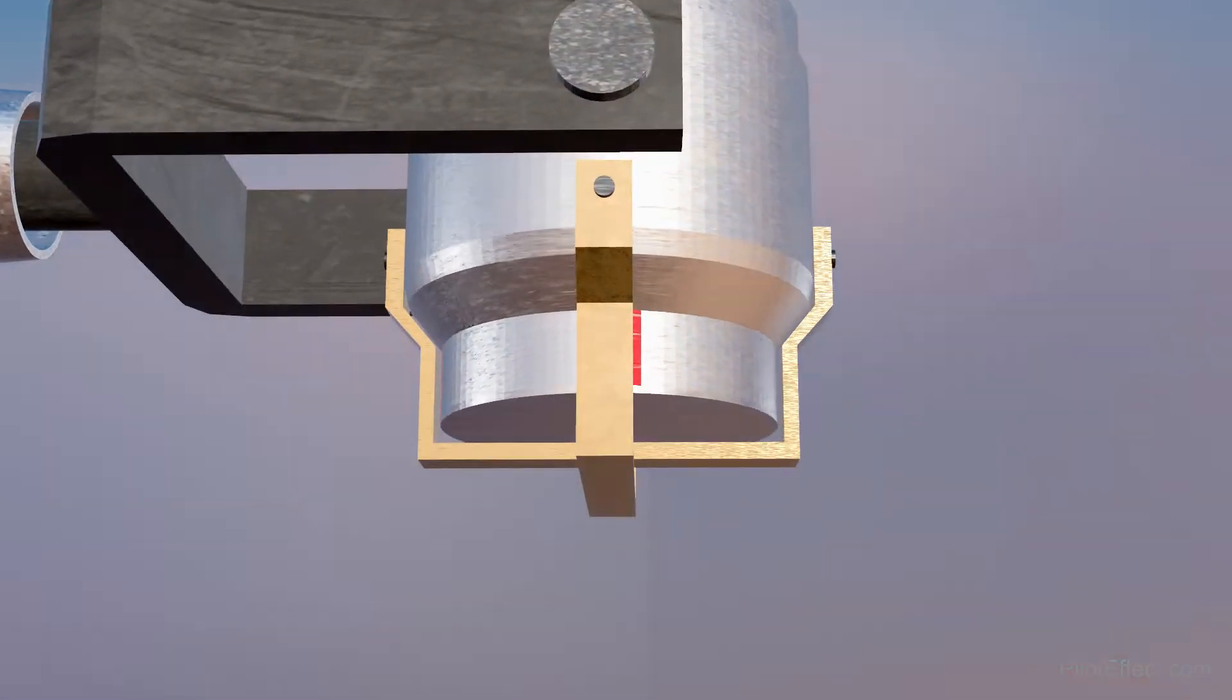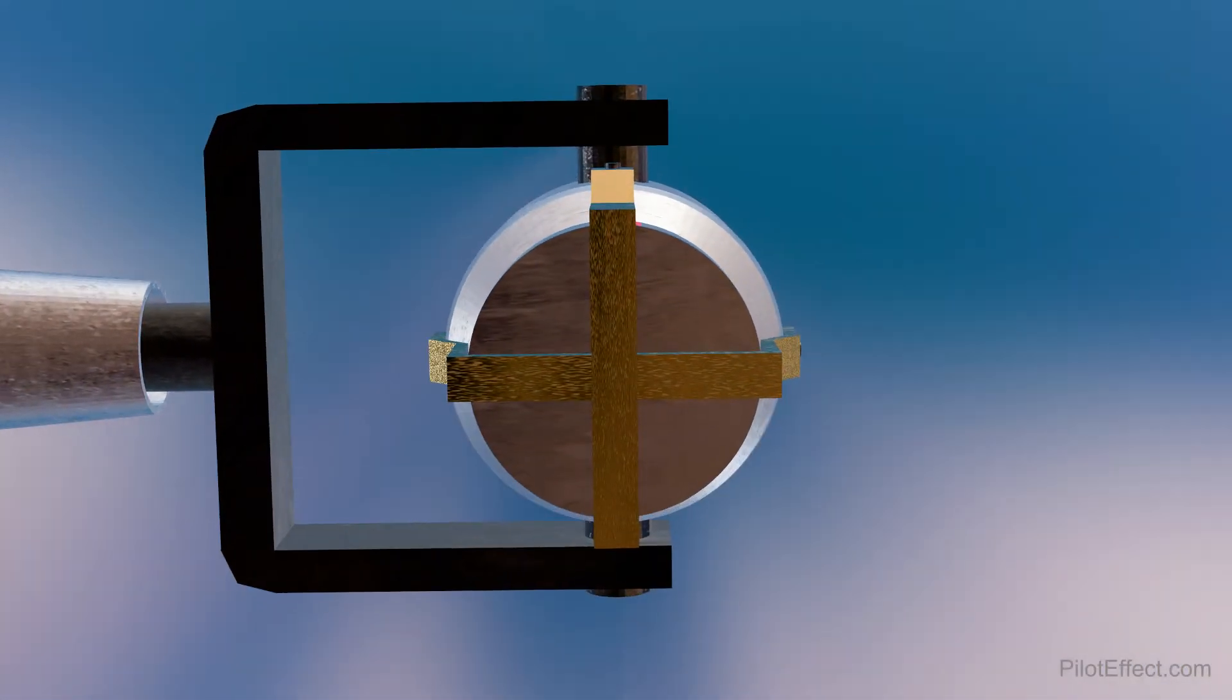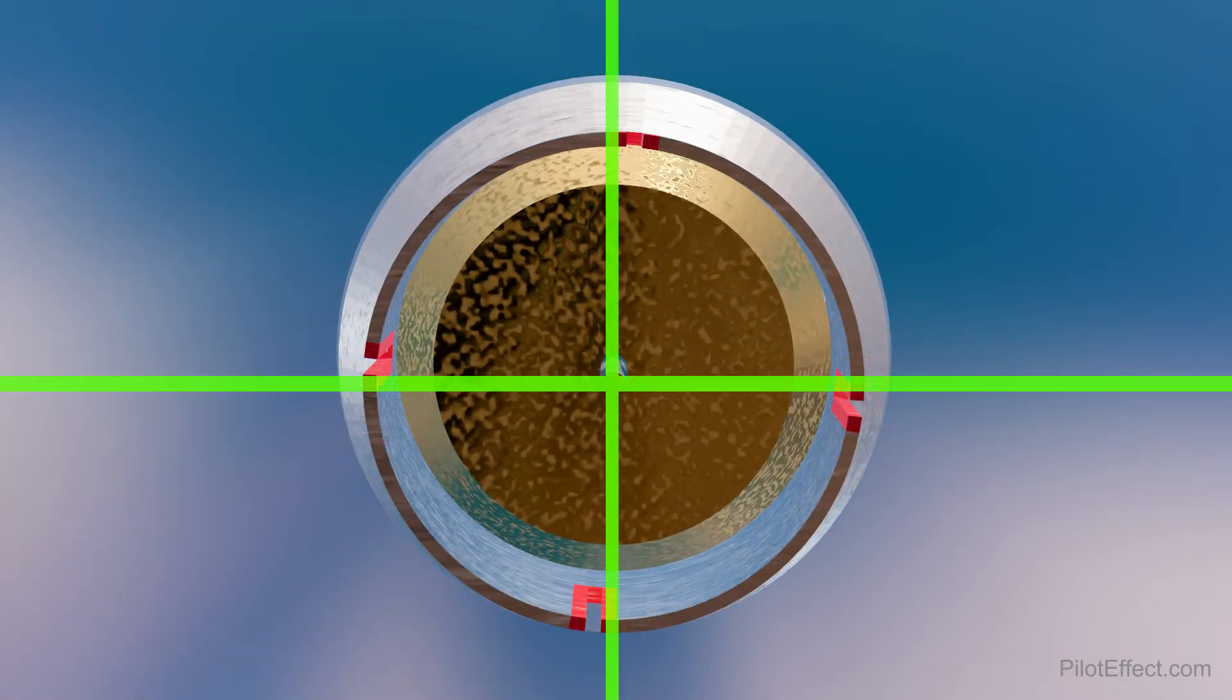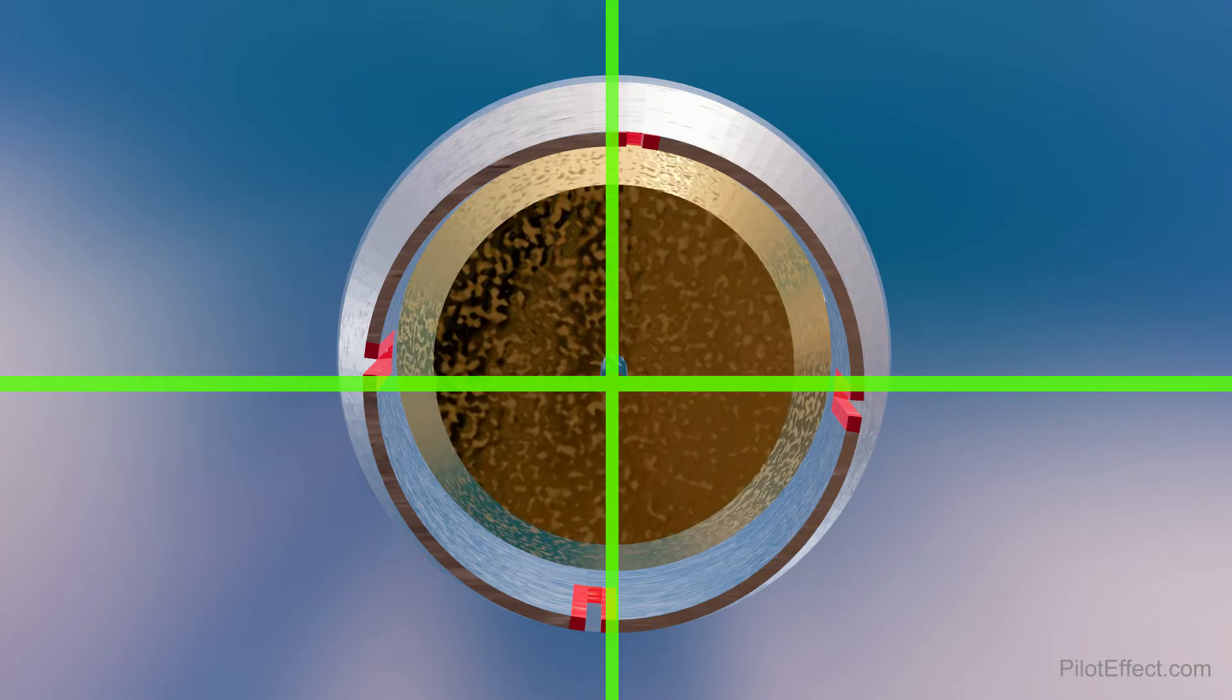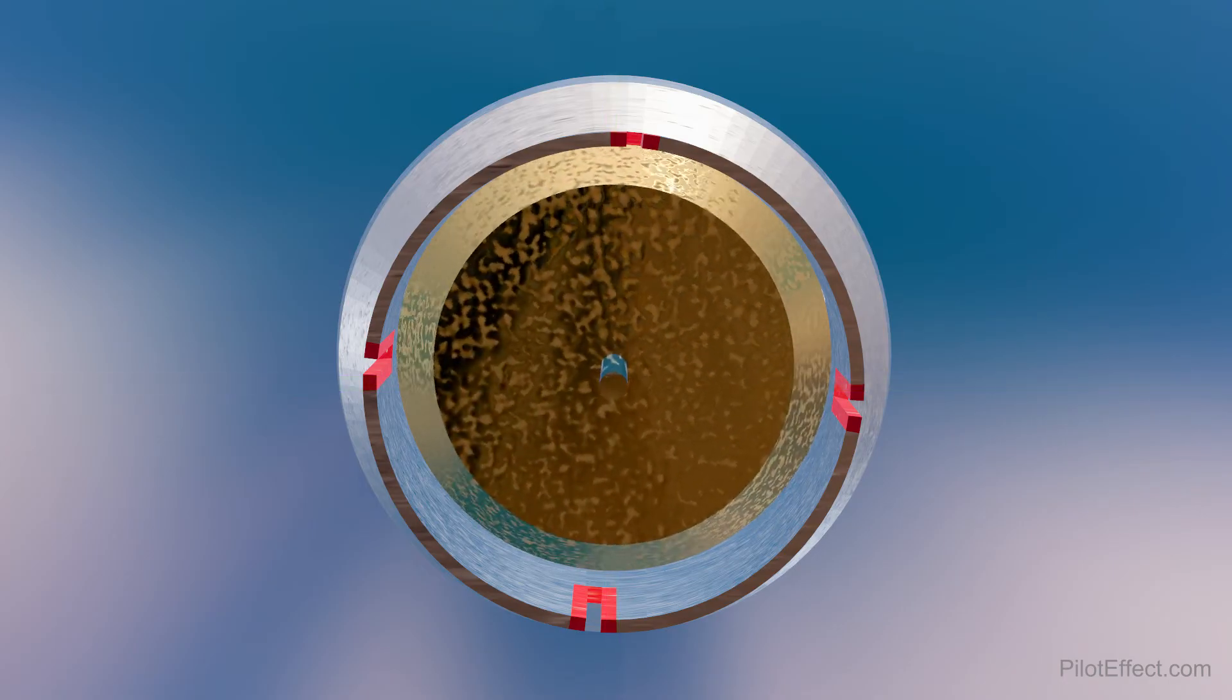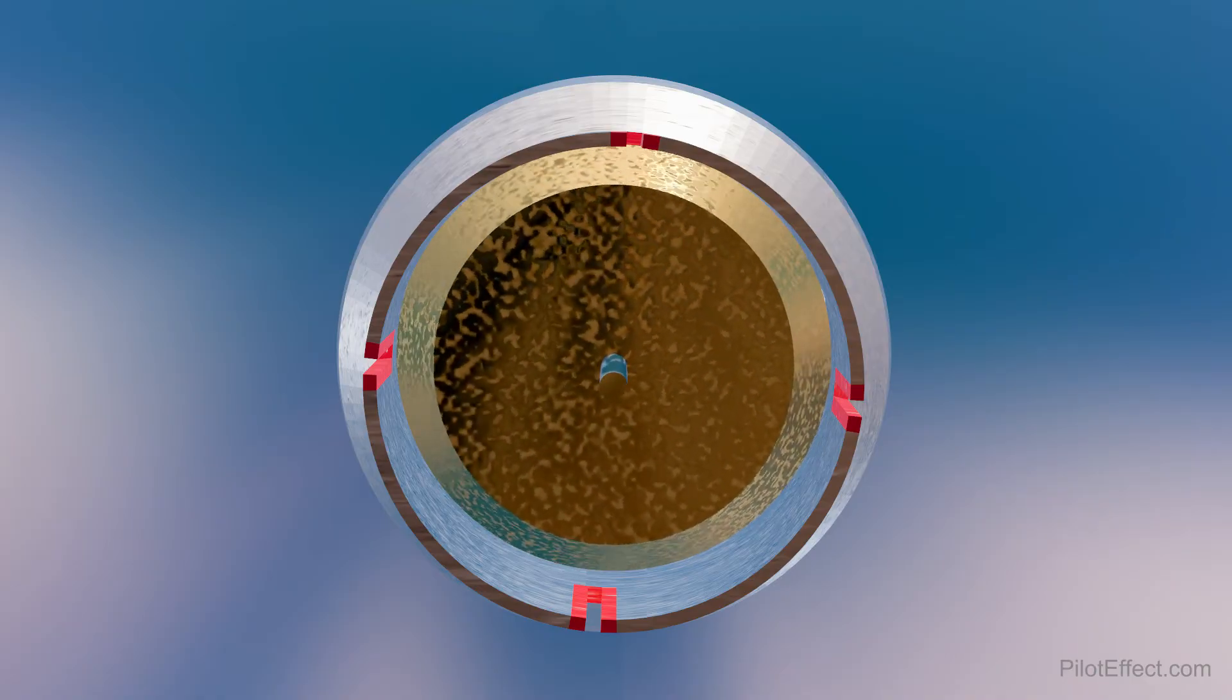Before going any further, an important thing to observe is the alignment of the ports. Looking at the cross section you can see that they are not aligned. And what this allows is when a vein moves, the vein covers one port and the opposite port is opened.